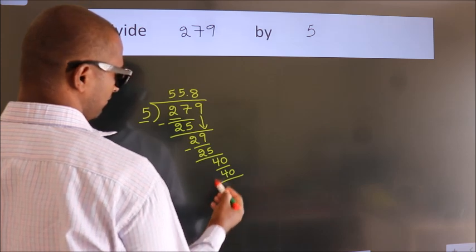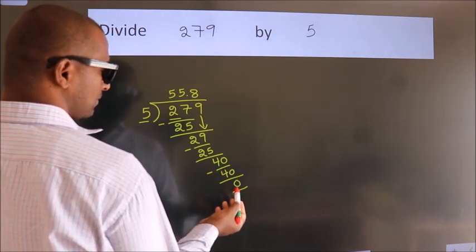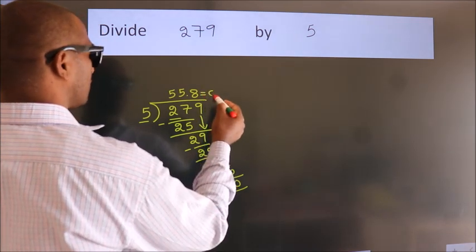Now we subtract. We get 0. We got remainder 0, so this is our quotient.